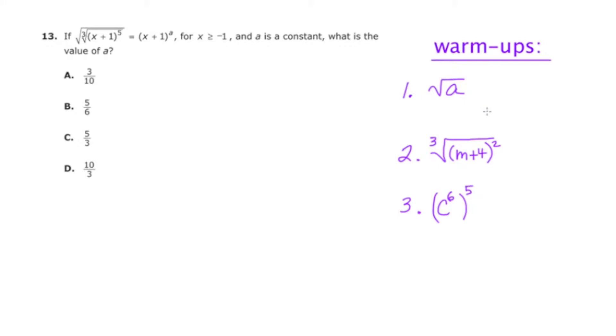The first is number one, which says the square root of a, and what I'd like to do here is transition this to fractional exponents. So this would end up being a to the one-half power. Remember that this is really a to the first, and when you're taking a square root this is really a 2. So your fractional exponent is going to be this number over this number.